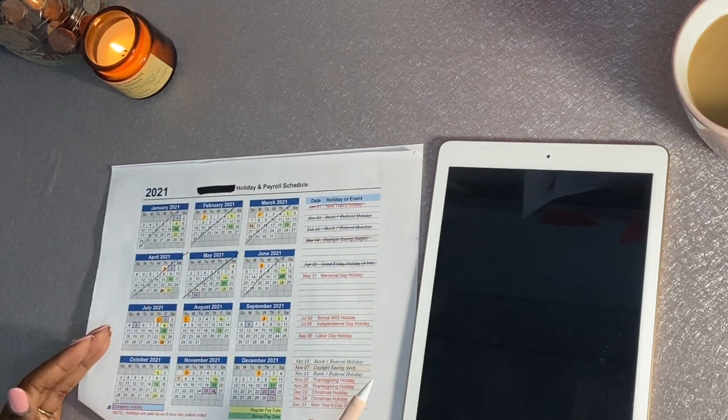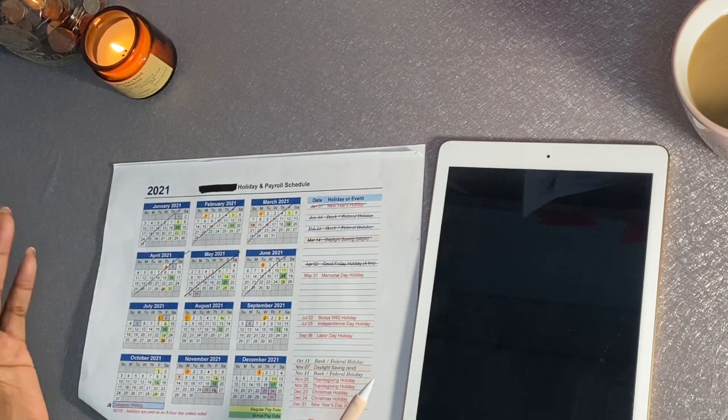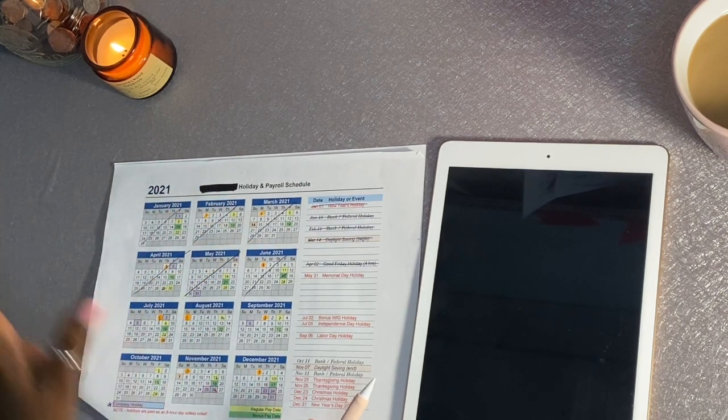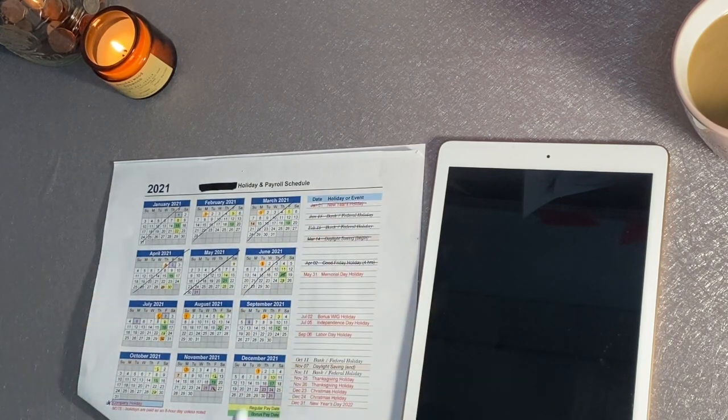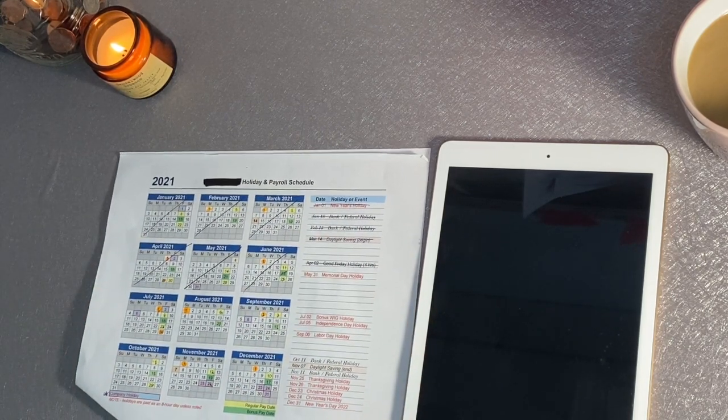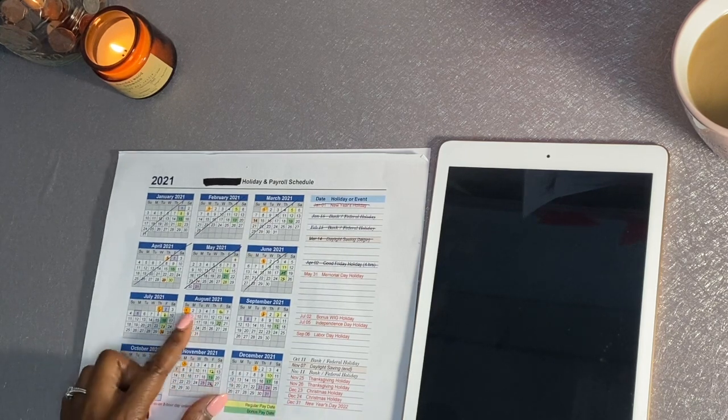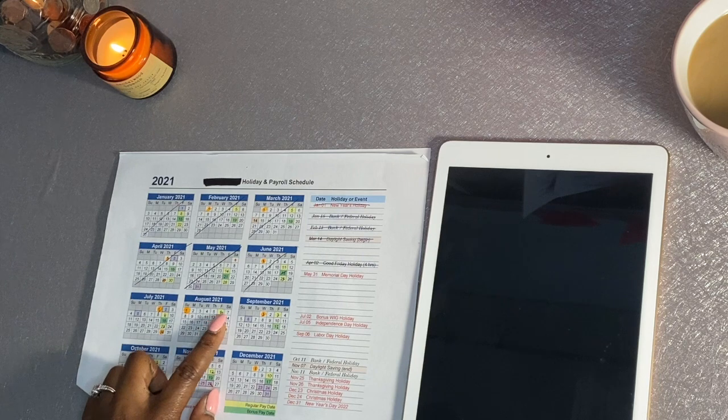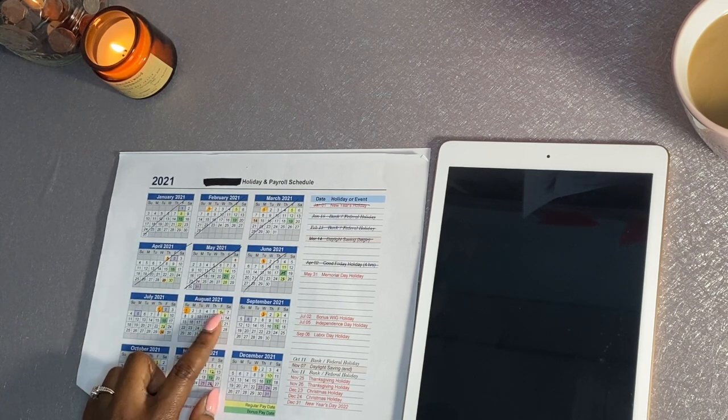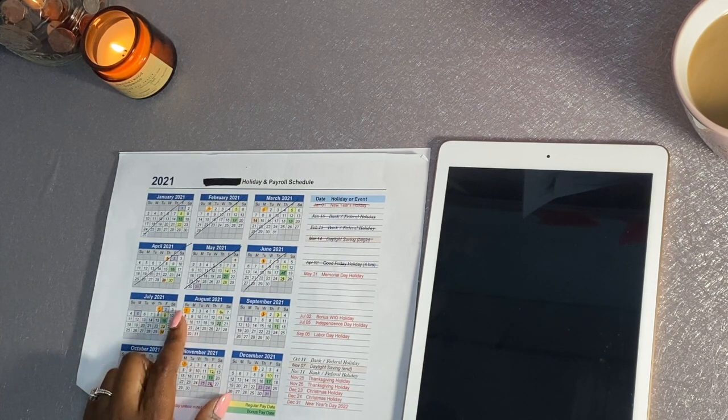So I love this calendar because I know exactly when I get paid for the whole entire year and I can just budget out my money this way. So it's actually Tuesday today the third, I'll be getting paid on the sixth, so we'll be budgeting for this paycheck coming up on the sixth.